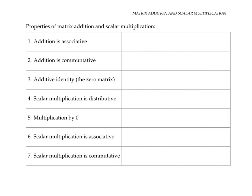These same properties hold for matrix addition and scalar multiplication. If you add matrices together, it doesn't matter if you first add A plus B and then add that result to C — you get the same thing if you group it the other way. This follows from the associative property for addition of numbers, because when we're adding matrices, we're just adding numbers in each position. Same thing for commutativity: you can add matrices in either direction and get the same answer, just because you can add numbers in either direction.